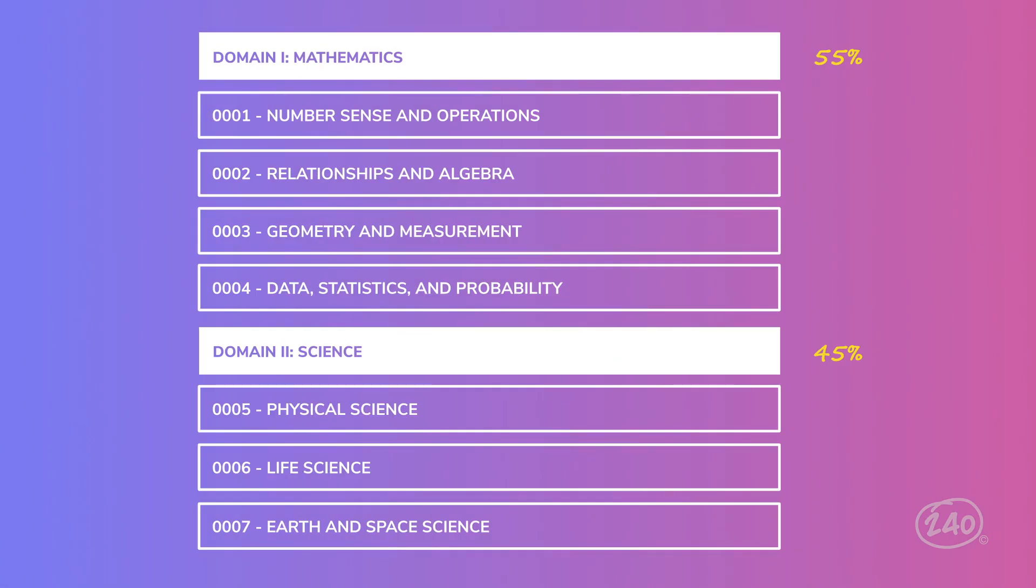Nice! You made it through all the math competencies. Are you ready for science? The science portion of this exam is broken down into three major science categories: Physical, Life, and Earth and Space. Let's take it from the top with Physical Science.